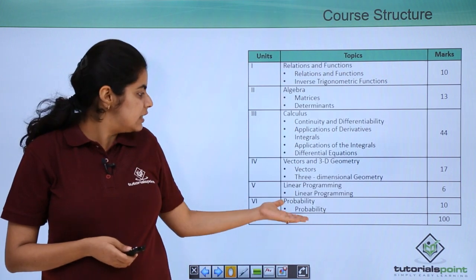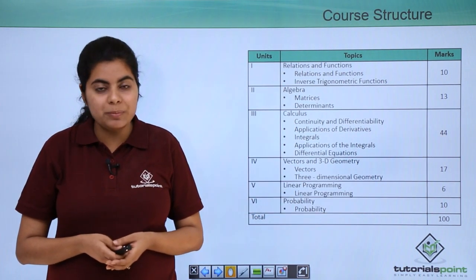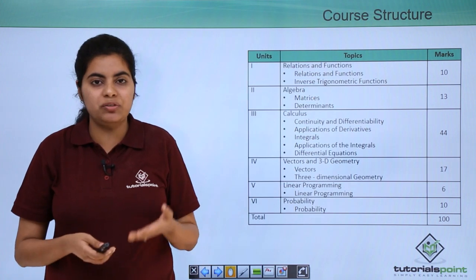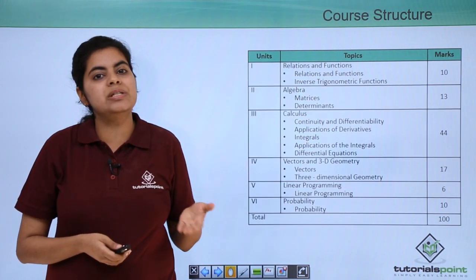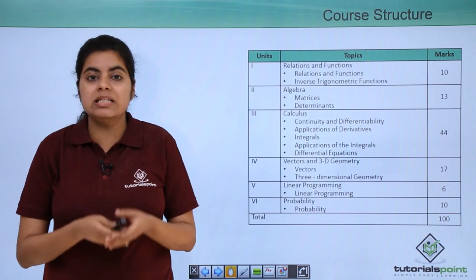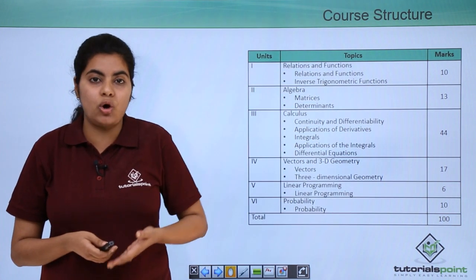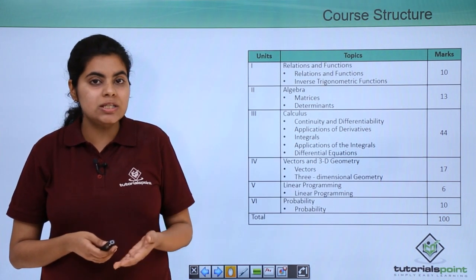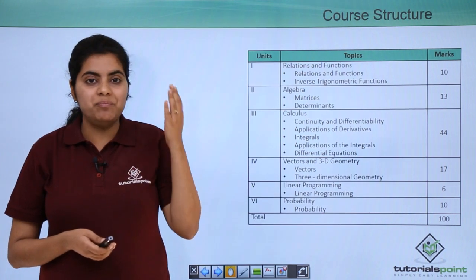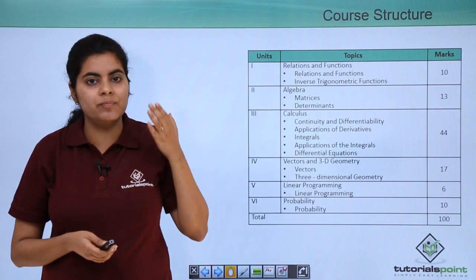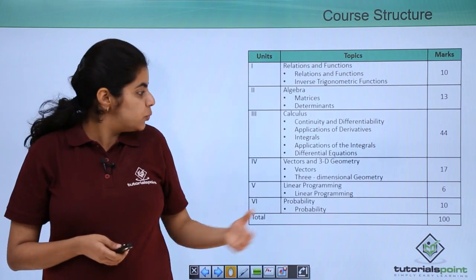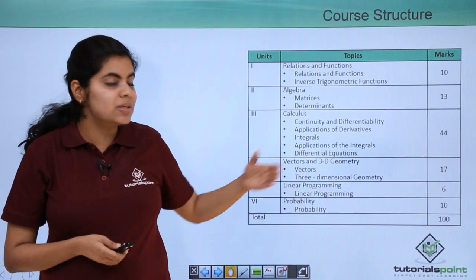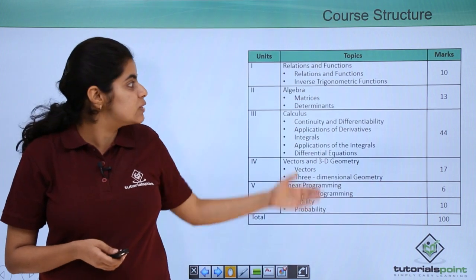Last unit that is in the syllabus mentioned is probability. Probability you have been studying from your junior classes as well. So in class 12 you'll be studying probability in more detail. This is again very important if you have to opt for engineering. Also probability is again based on how you can interpret, analyze and understand things on your own. So probability is also there in the syllabus, constitutes again ten marks as was the unit one.